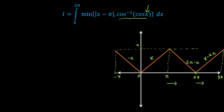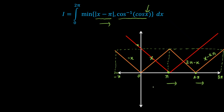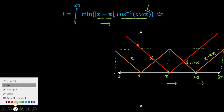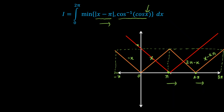Now I have done the graph of cos⁻¹(cos x). Next I am going to do the graph of |x - π|. This is similar to |x|, just shifted right to π. The first branch on the left side of π is π - x, and the second branch on the right side of π is x - π. So I have defined the graph.